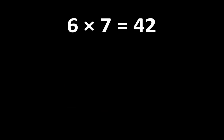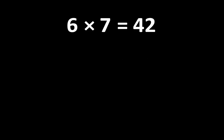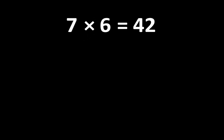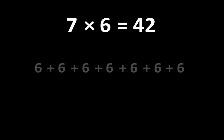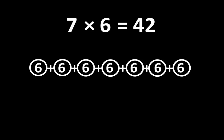So we can think of 6 times 7 as 6 groups of 7. You may recognize this as repeated addition. If we count the groups of 7, we can see that there are 6 groups of 7, and the total of 6 groups of 7 is 42. And since 7 times 6 is also equal to 42, we can think of 42 as 7 groups of 6. Counting the groups of 6, we can see there are 7 groups of 6, which is equal to 42.